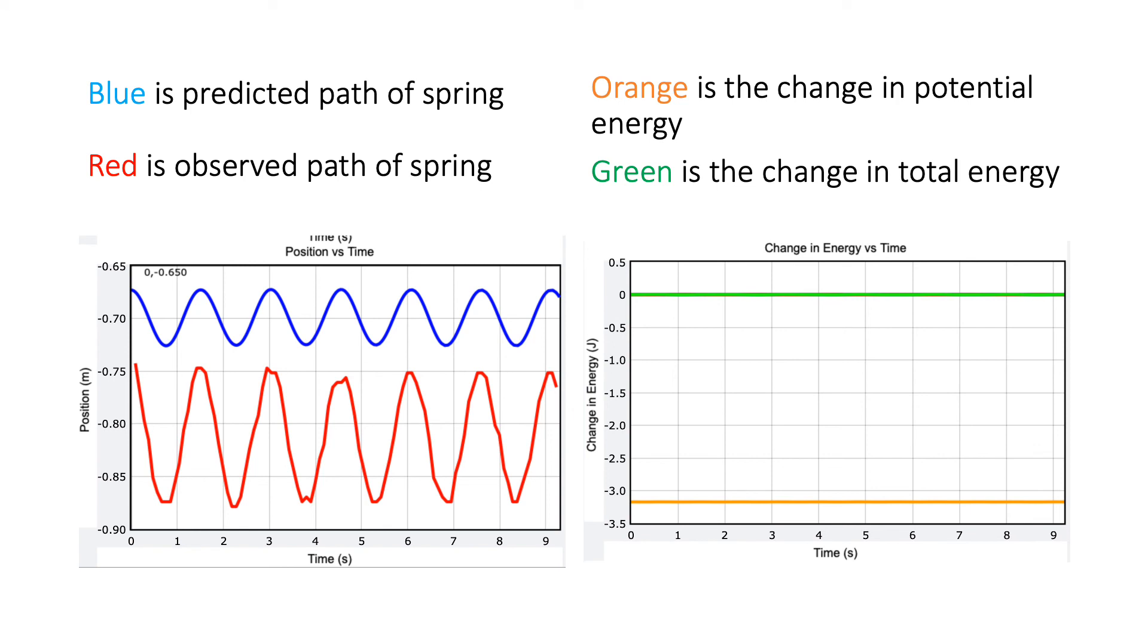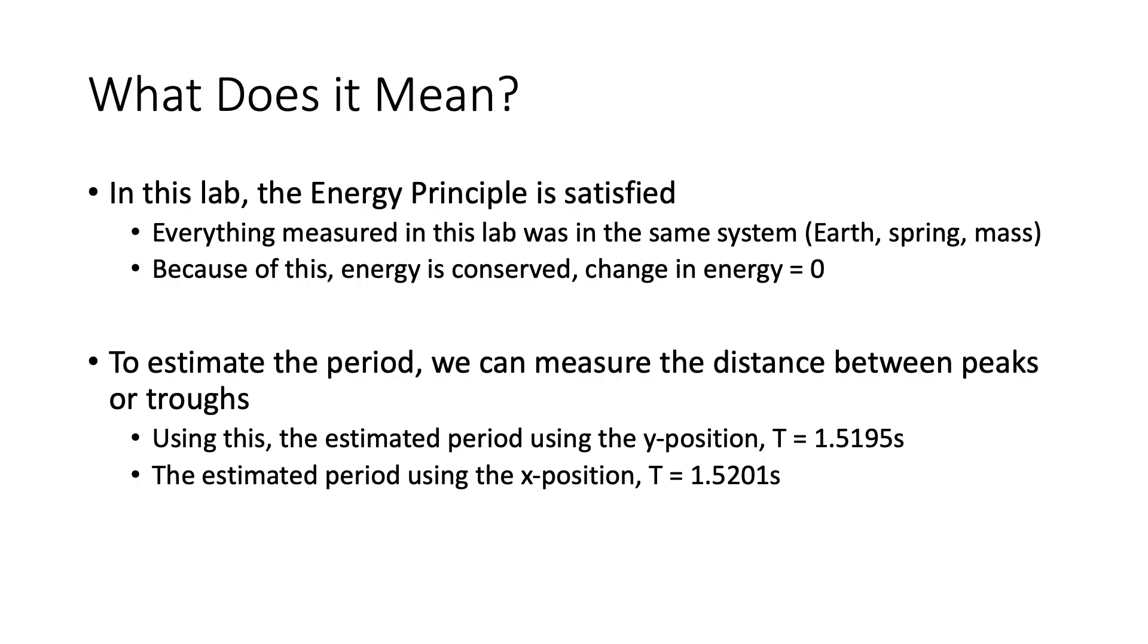However, the orange line is a little confusing. I tried to play around with it and couldn't get it to change or oscillate. Finally, what does this lab mean? The energy principle is satisfied, meaning the total energy or the change in energy of the system is zero. That's because everything measured in this lab was in the same system.